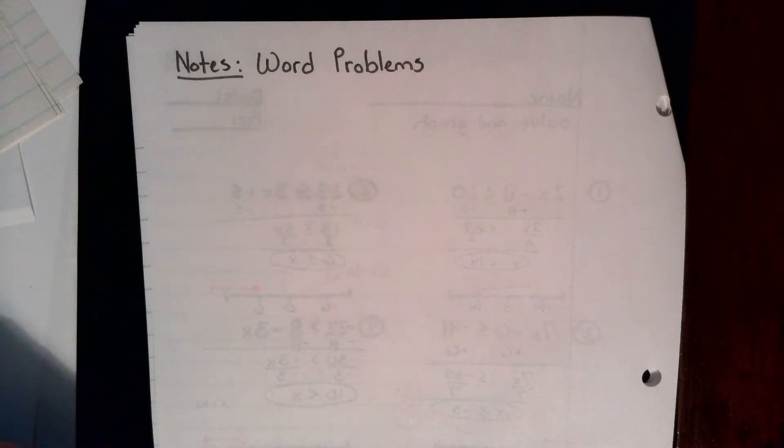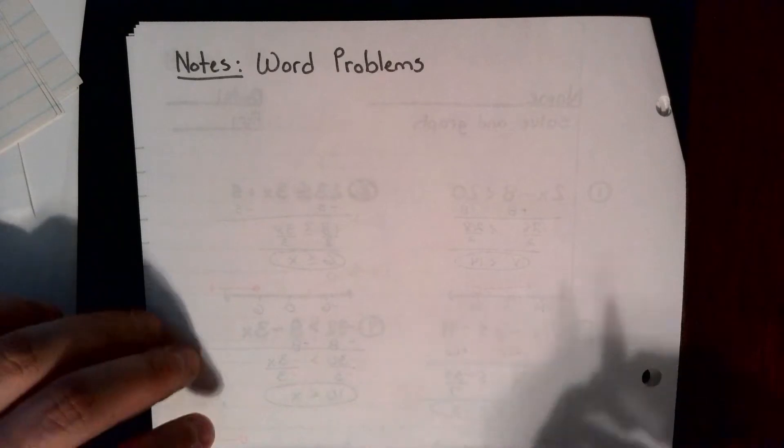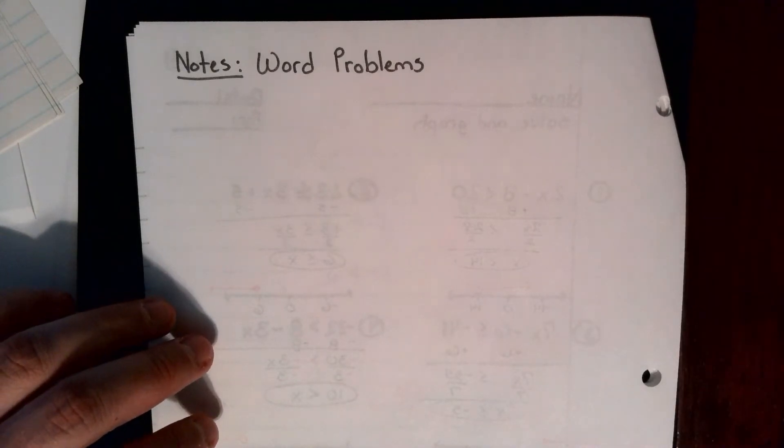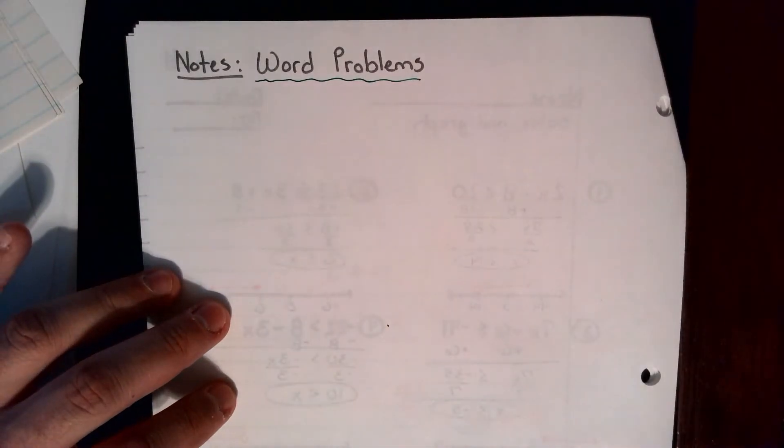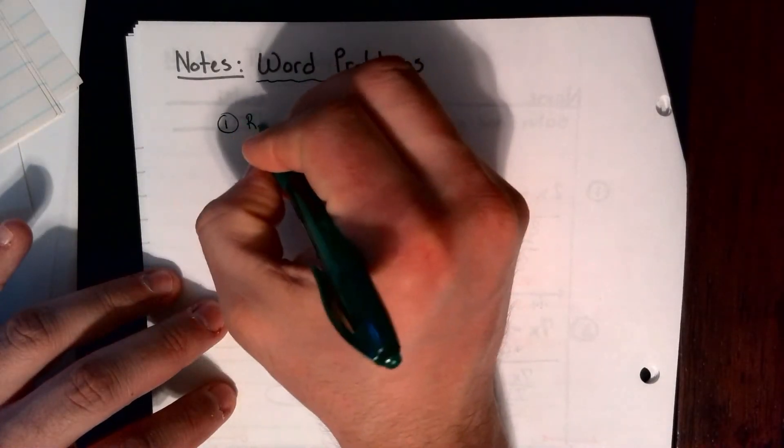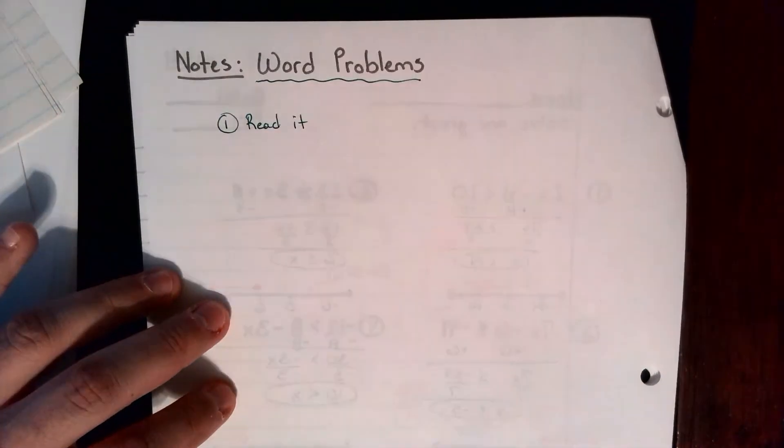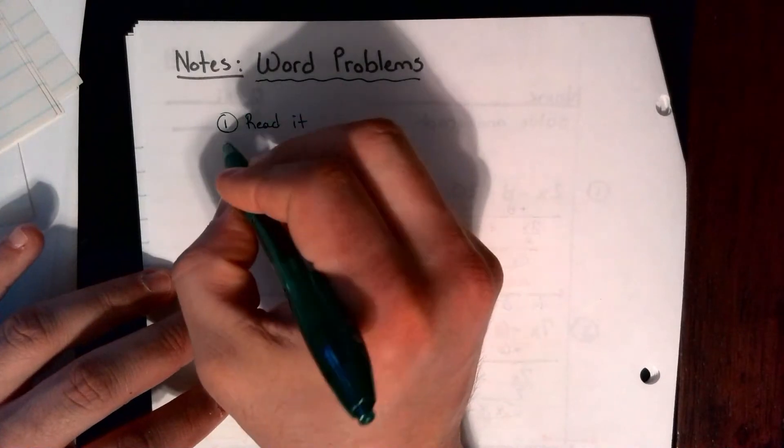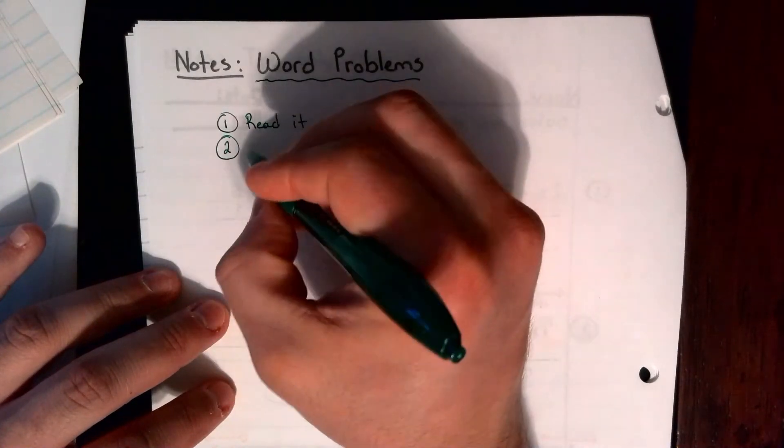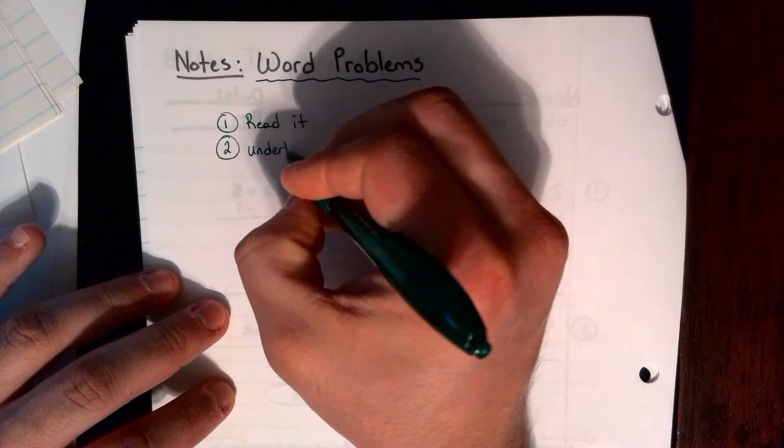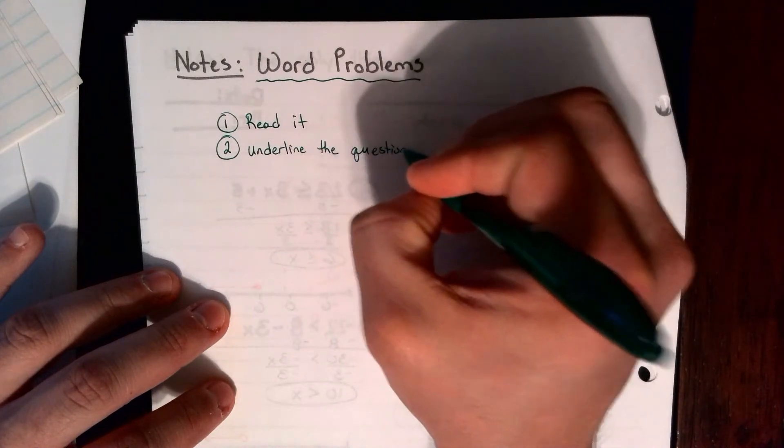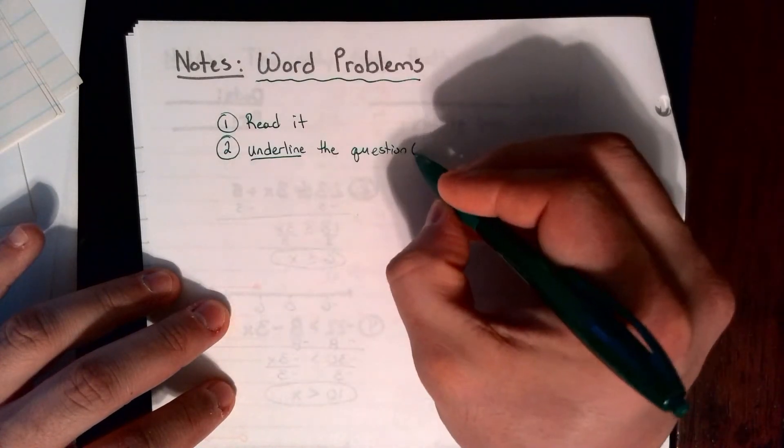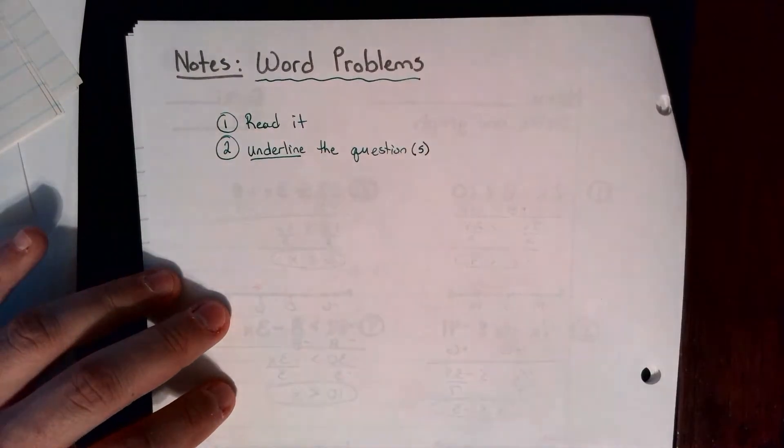Let's go over some of those things that you hopefully remember from the algebra unit with word problems. First is just our strategy of how we attack the word problem. You remember that word problems in general, just any word problem, really even in other subjects, you want to first read it, the whole problem. After we read it, we're going to underline the question or questions, it could be plural.